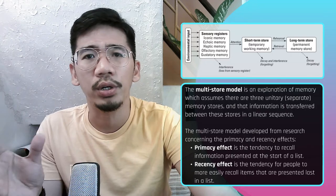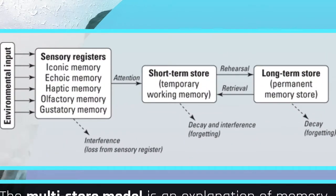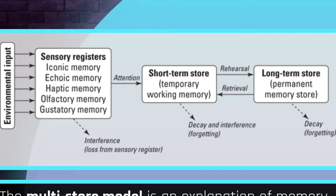The logic behind the multi-store model is that the brain rapidly encodes all the information that bombards your senses — the environmental input — into what's called a sensory register. A sensory register exists for each of the five senses: iconic memory for sight, echoic memory for sound, haptic memory for touch, olfactory memory for smell, and gustatory memory for taste. The sensory register contains instant copies of the environmental input, lasting less than a couple of seconds, although different senses have different durations.